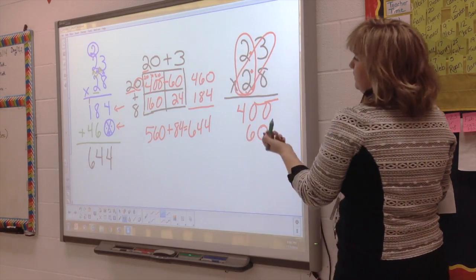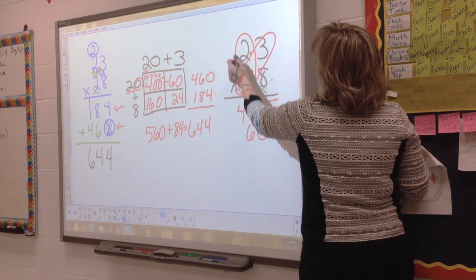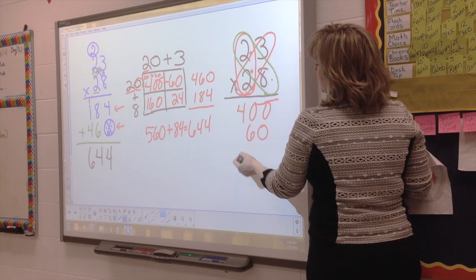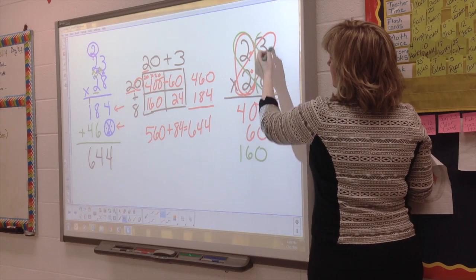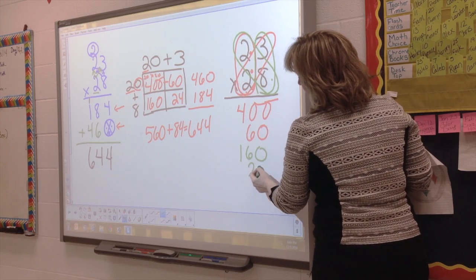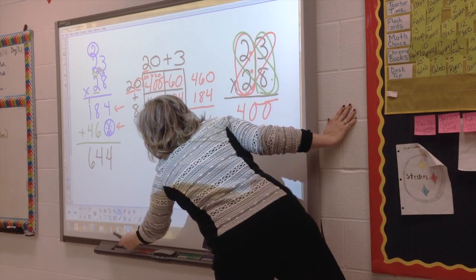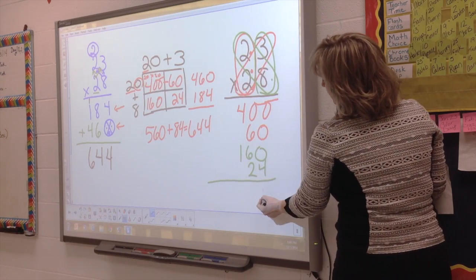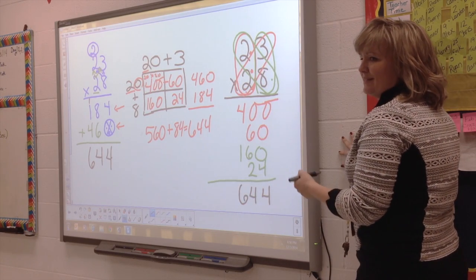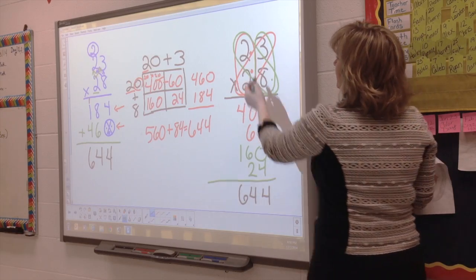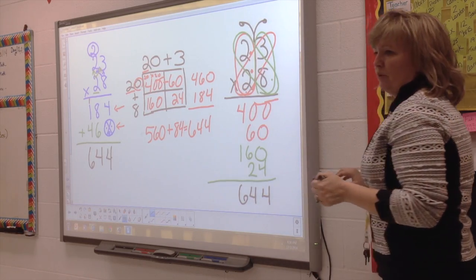We'll switch colors so the kids can see this. Now I'm going to say 8 times 20 — 8 times 2 is 16, and I have one zero, so that's 160. Now I have to do my ones: 8 times 3 is 24. So when we add that, we get 4, 14, 644. It's the same exact thing. And the kids say, we get to do that — there's our butterfly. That's why they call it the butterfly method.